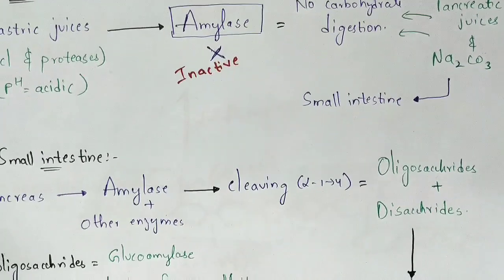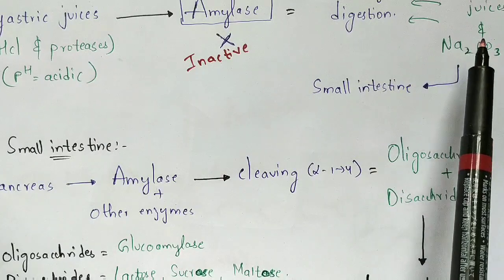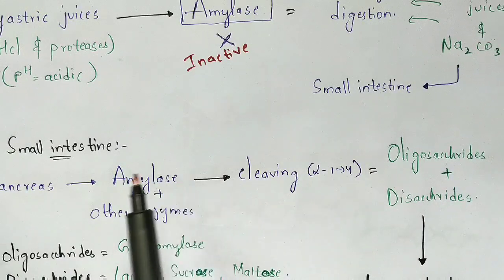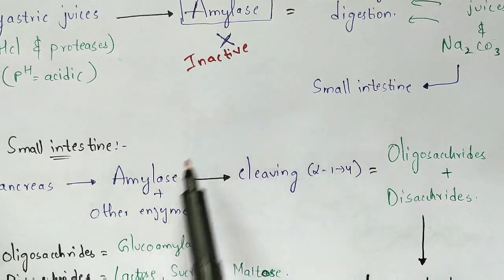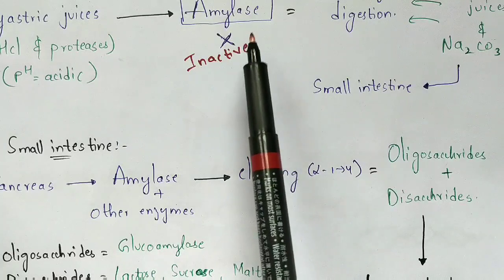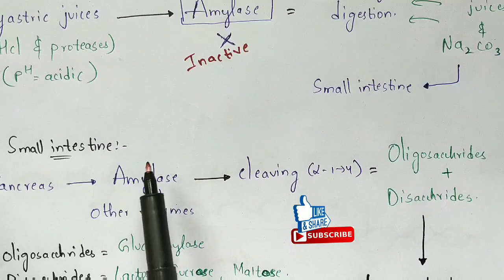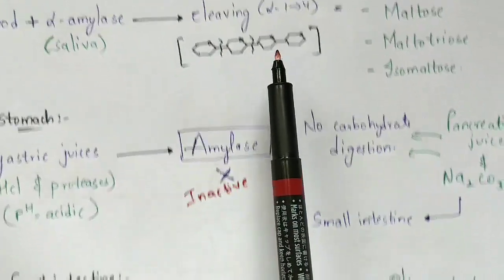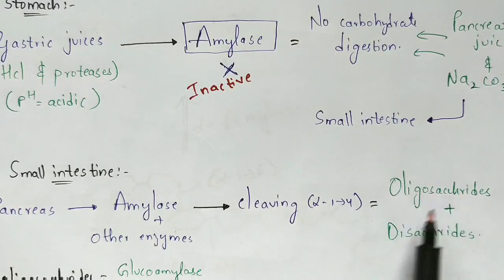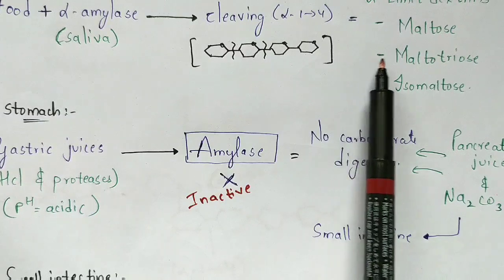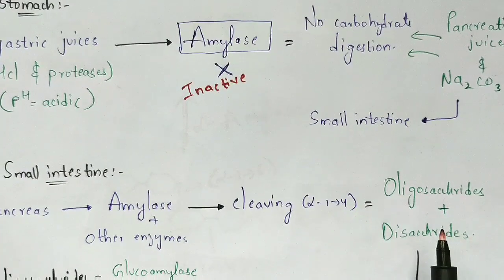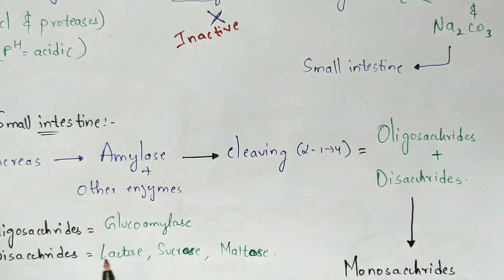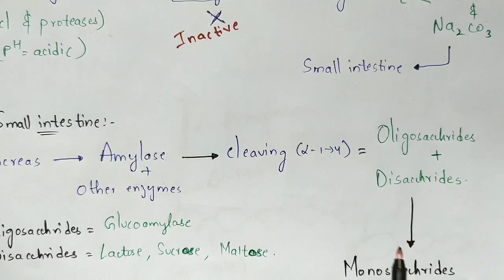In the small intestine, the pancreas plays a major role by secreting pancreatic juices, sodium carbonate, and also amylase. This pancreatic amylase combines with the inactive amylase and reactivates it. The active amylase again cleaves alpha 1 to 4 glycosidic linkages, but here the products formed are oligosaccharides and disaccharides. Oligosaccharides include glucoamylase, and disaccharides include lactose, sucrose, and maltose.